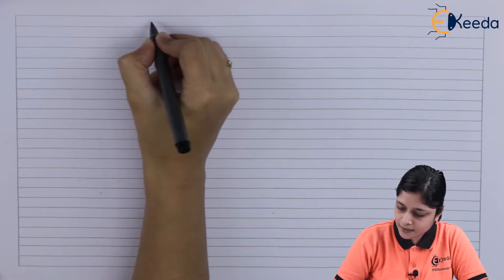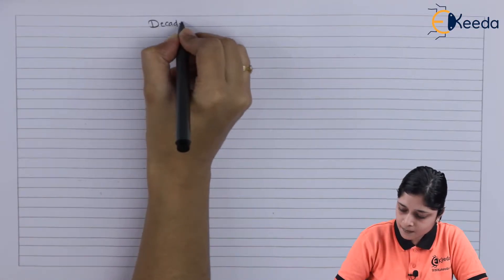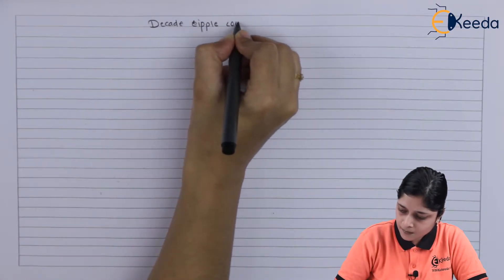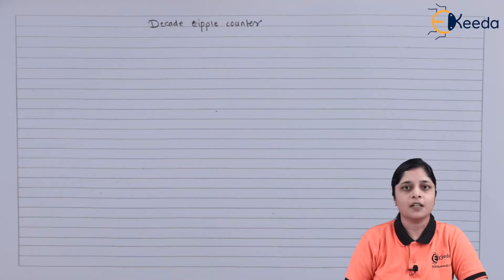So your heading is Decade Ripple Counter.